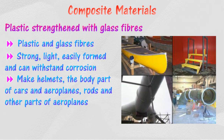Plastic strengthened with glass fibers is made from plastic and glass fibers, forming composite plastics that are very strong, light, easily formed, and can withstand corrosion. It is used to make helmets, the body parts of cars and airplanes, rods, and other parts of airplanes.